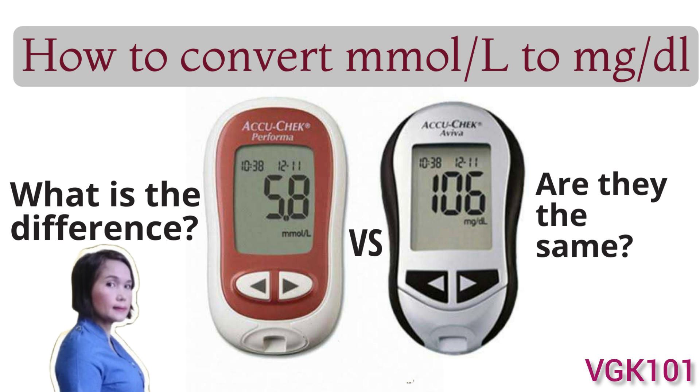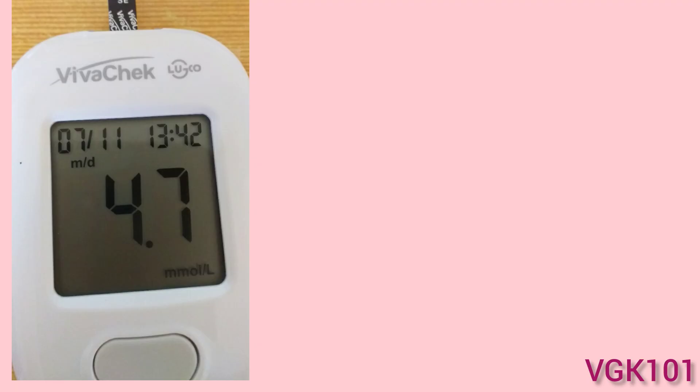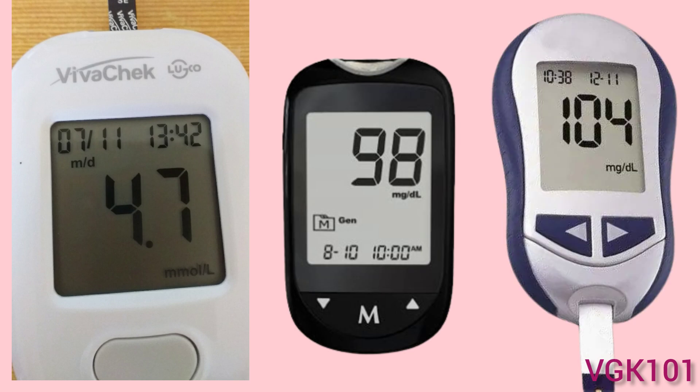If your glucometer is made in China, Japan, Canada, Australia, New Zealand, or other European countries, the unit of glucose levels is measured in millimoles per liter of blood. These readings typically include a number with a decimal point. If your glucometer is made in the US, Latin America, or the Middle East, the unit of glucose levels is measured in milligrams per deciliter. These readings usually consist of numbers in the tens or hundreds.